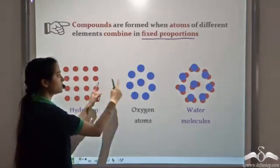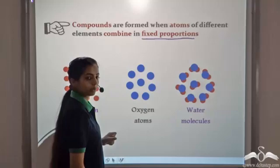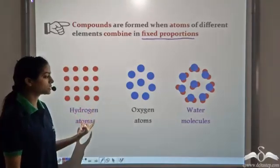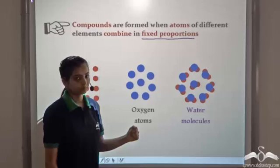So these atoms, they always combine in fixed proportions to form compounds. So atoms of different elements, whenever they combine in fixed proportions, they form compound. In this case, hydrogen atoms combined with oxygen atoms in fixed proportions to form water.